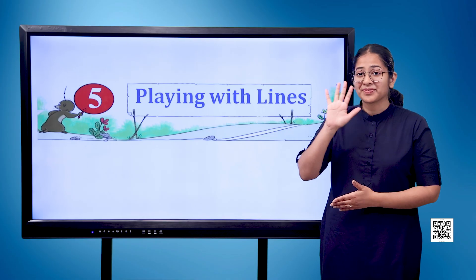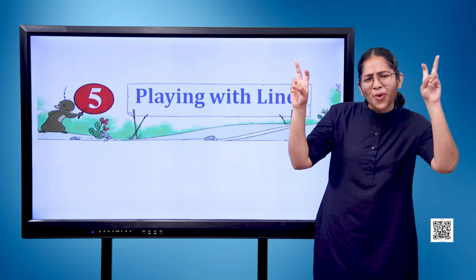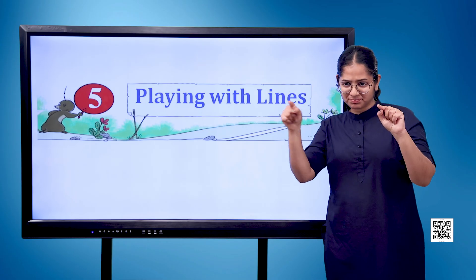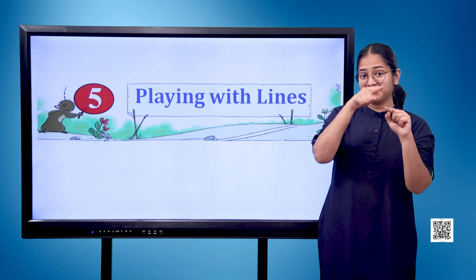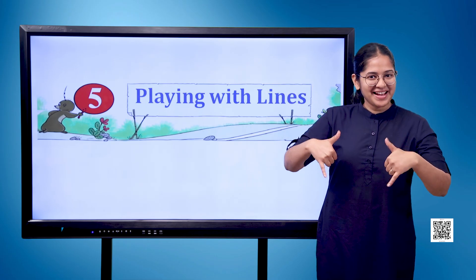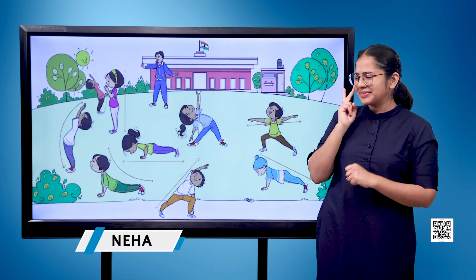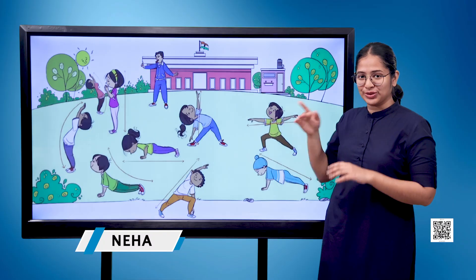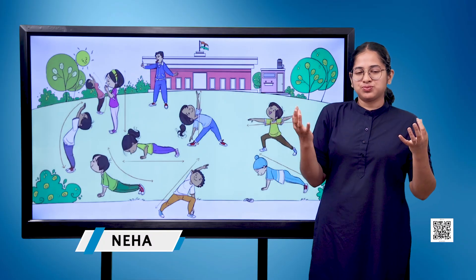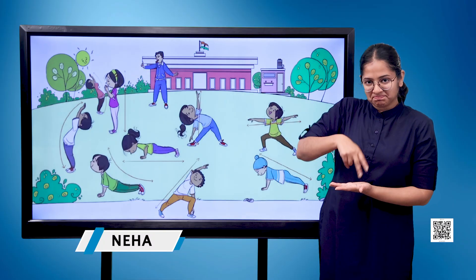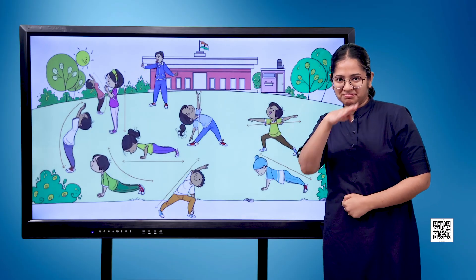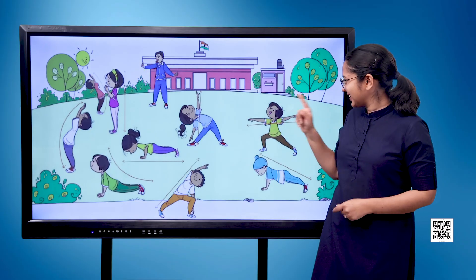Chapter 5: Playing with Lines. We have an image here. The image shows children practicing different yoga asanas under the guidance of a yoga teacher.